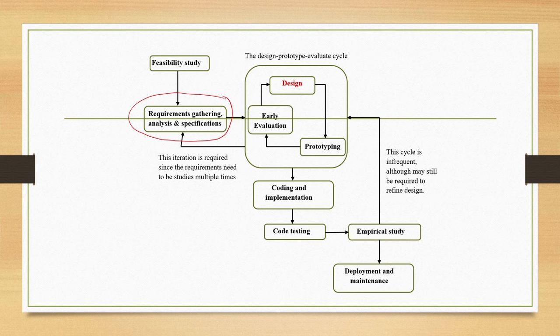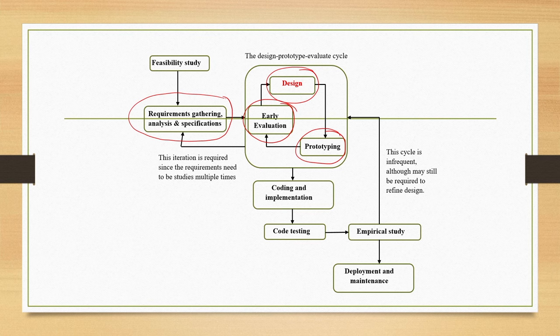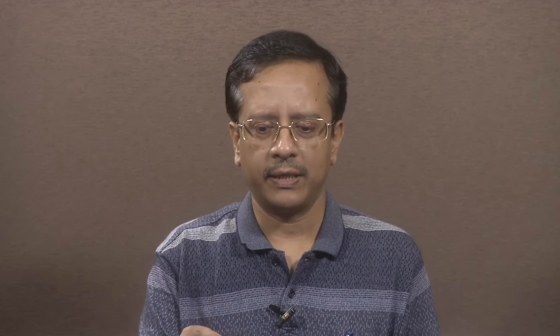This is followed by a set of stages which form a cycle: Design, Prototyping and Early Evaluation. These three stages together constitute a Design, Prototype, Evaluate cycle. Here we talk of design at two levels. One is design of the interface and interaction. For that particular design, we need to prototype and get it evaluated to understand usability issues. If after evaluation we find some issues, we may need to go for refinement of the design. Then again we prototype, again evaluate, and in this way it forms a cycle.